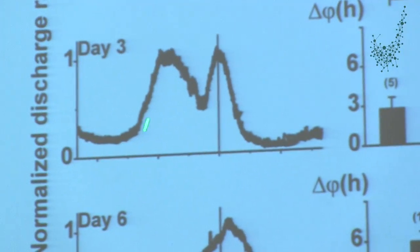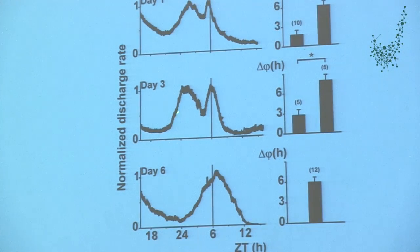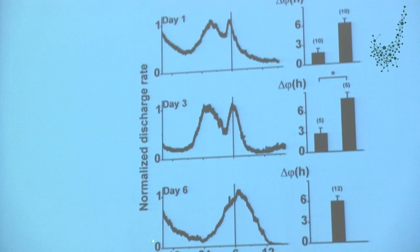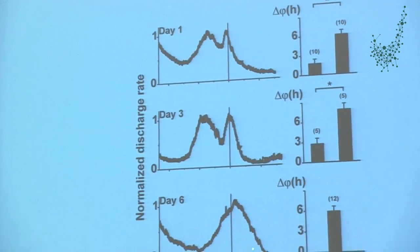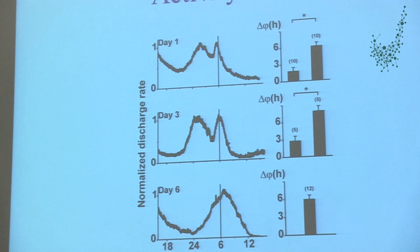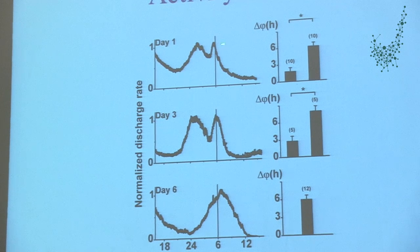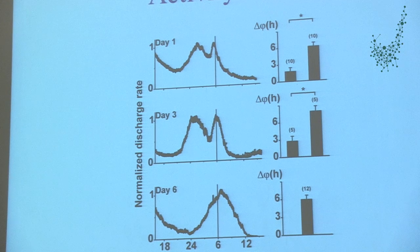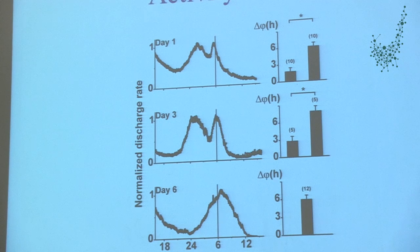At day three, two populations are still visible — one shifted, one unshifted. Only at day six does the unshifted population move over and fully synchronize with the shifted population. So there is a group of cells in the clock that produces inertia and robustness — it only shifts to the new cycle when it has been exposed to the new cycle for enough days.